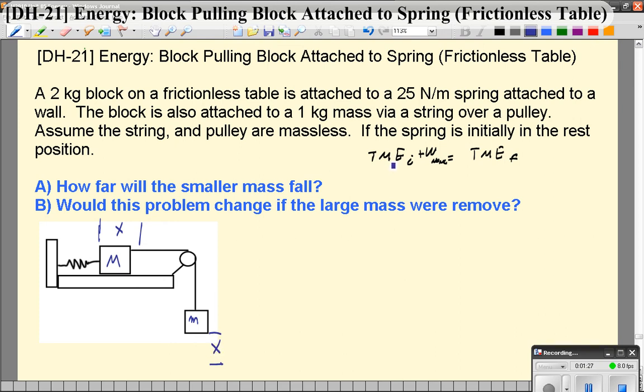Now in looking at the total mechanical energy, the total mechanical energy in the beginning is going to be simply the potential energy gravitational here. Because the spring is not stretched at all or compressed, there's no potential energy stored in the spring.